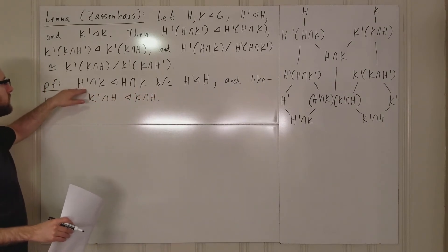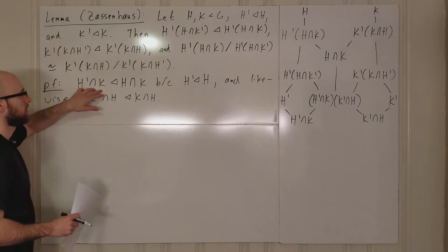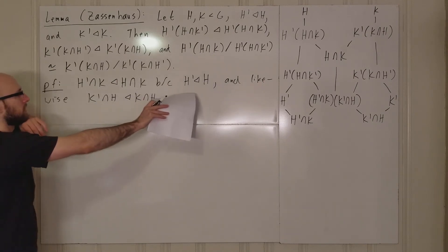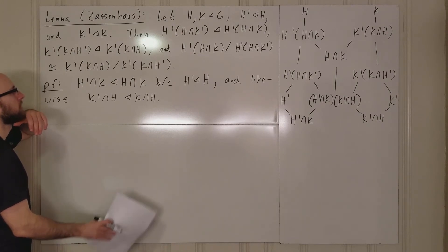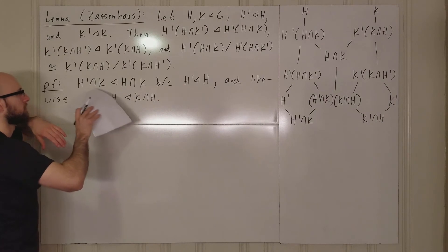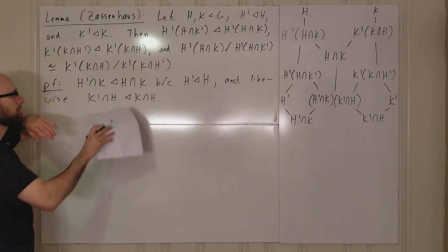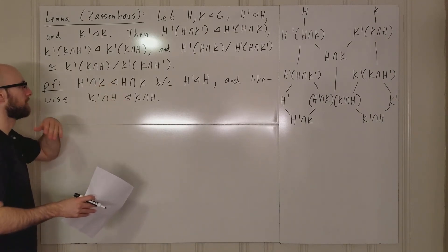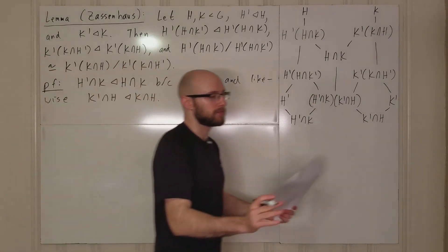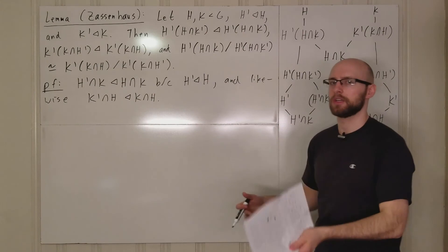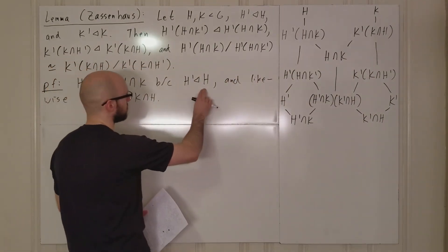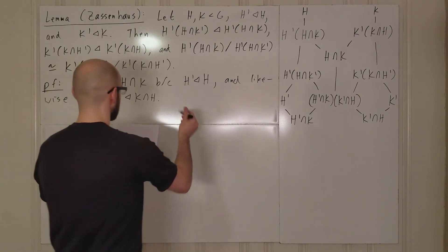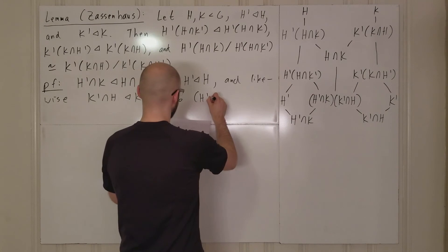The reason is: if h prime is normal in h, then if you take anything in h prime intersect k and conjugate by something in h intersect k, that element is in particular in h, so by normality you end up with something in h prime. And because you're also conjugating by something in k, you end up with something in k. So conjugation gives you something in h prime intersect k, proving normality. This works for any h prime normal in h and any subgroup k.